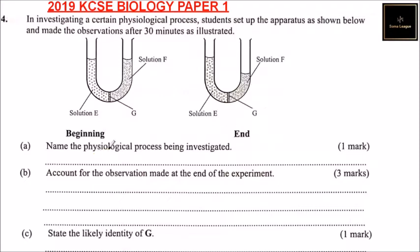Name the physiological process being investigated. You can see from the beginning to the end, solution A reduces in volume. So we can say that some of the liquid of F is absorbed into solution A, and this is what we call osmosis.